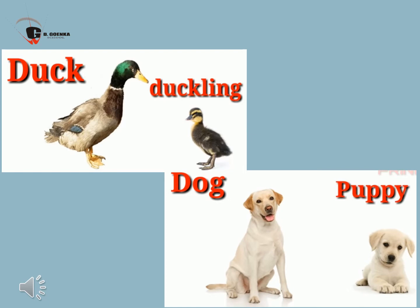Duckling. Baby of a duck is duckling. Ducks have highly waterproof feathers and they are omnivores, which means they eat both flesh and plants. Ducklings younger than 10 days tend to swim and walk. Next is dog — Puppy. Baby of a dog is puppy. Puppies are born deaf and blind. They spend 15 to 20 hours sleeping, and dogs are also known as the best friend of humans.